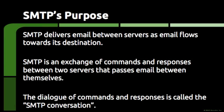SMTP is used to deliver email between servers when a piece of email needs to travel across the internet. The handoff of email between two different servers is what SMTP accomplishes, and SMTP does this using a very conversational set of commands. Servers talk to each other, exchange bits of information about themselves and about the email that will be handed over, and then the actual piece of email is communicated to the receiving server. This back and forth is referred to as the SMTP conversation.